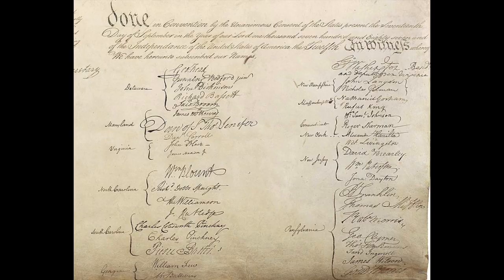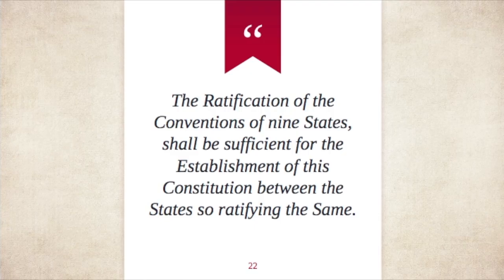Article seven is ratification, which details everyone who signed the Constitution. Ratification basically means signing and making valid. A quote reads: "Ratification of the conventions of nine states shall be sufficient for the establishment of this Constitution between the states so ratifying the same." Note that the original Constitution didn't directly lay out citizens' rights — those came later in the Bill of Rights, which I'll be talking about in a separate video.